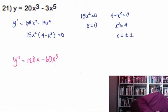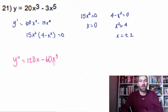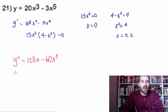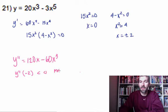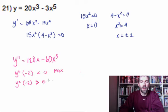Let me just double check that — actually it's backwards. If the second derivative at a point is less than zero, we're going to have a max. If it's greater than zero, we're going to have a min.